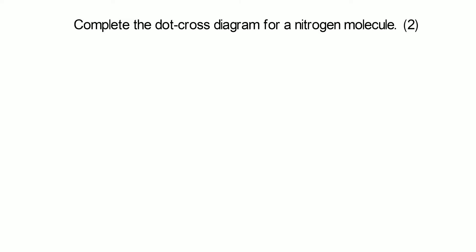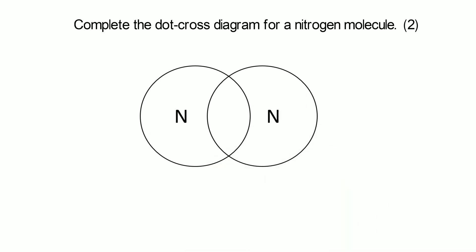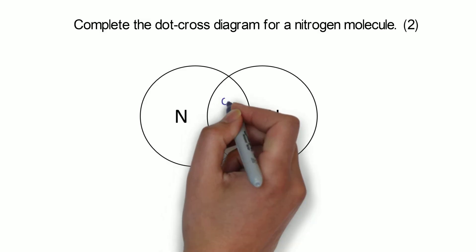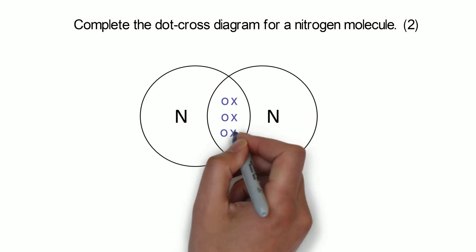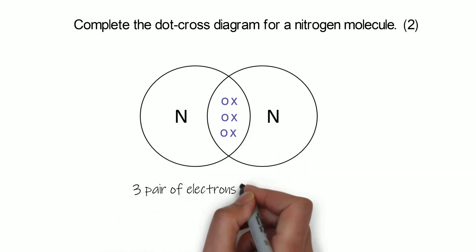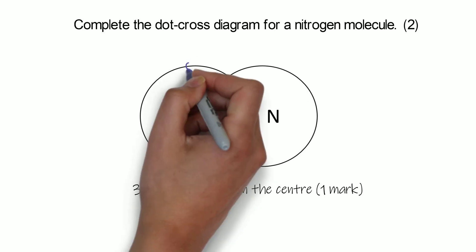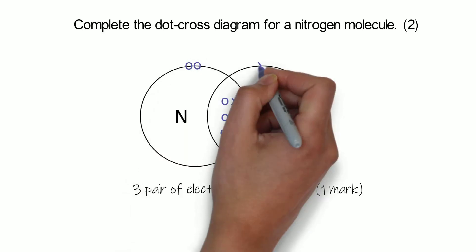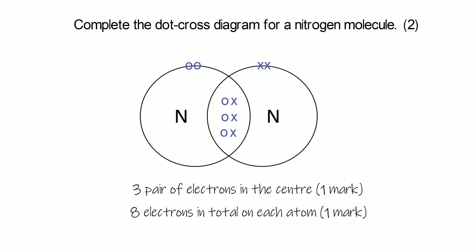Nitrogen is slightly different because it's in group five, so it has five electrons in its outer shell. Pause the video and see if you can work this one out. Nitrogen needs to gain three more electrons, so we draw three pairs in the centre — it forms a triple bond. We get our first mark for those three pairs. Both atoms already have six electrons from the centre, so each only needs two extras to make up to eight. On these diagrams, make sure you draw the electrons from one atom as dots and the other as crosses — that's what makes it a dot cross diagram.